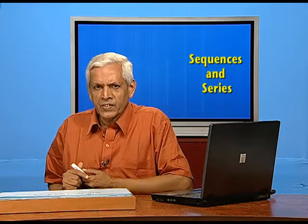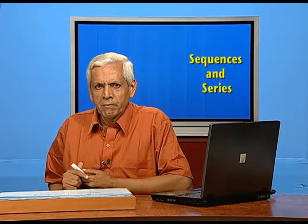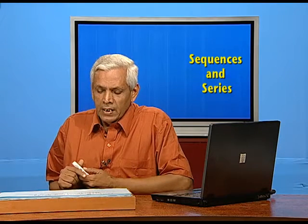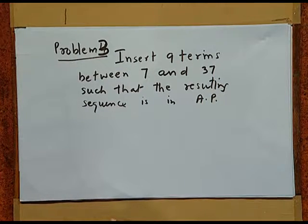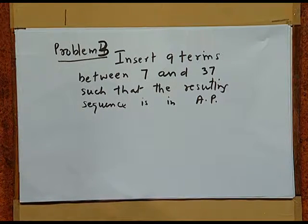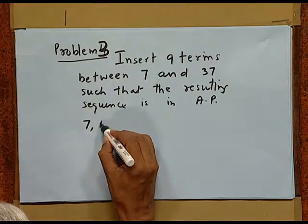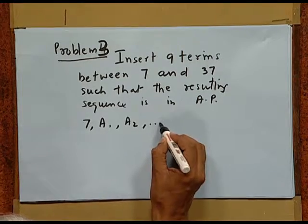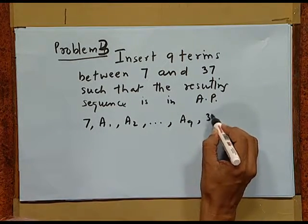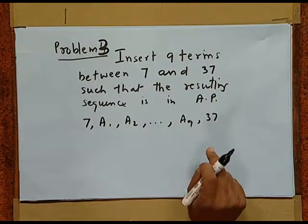Instead of inserting one element, we can insert more, as in the following problem: Insert 9 terms between 7 and 37 such that the resulting sequence is in AP. We have two terms 7 and 37, and we are inserting 9 items in between, giving us 11 terms in total. The inserted terms are a1, a2, up to a9, forming the sequence 7, a1, a2, …, a9, 37.